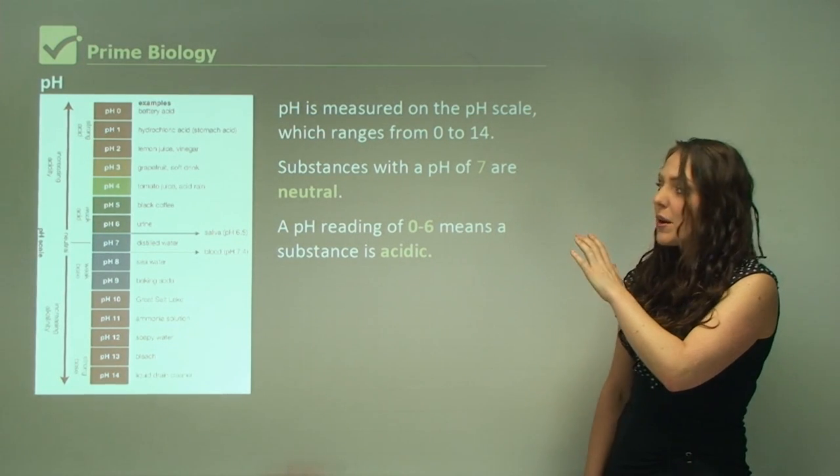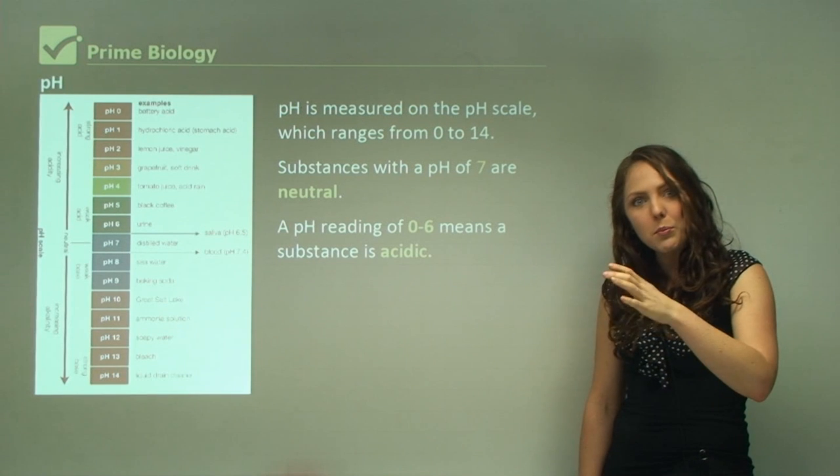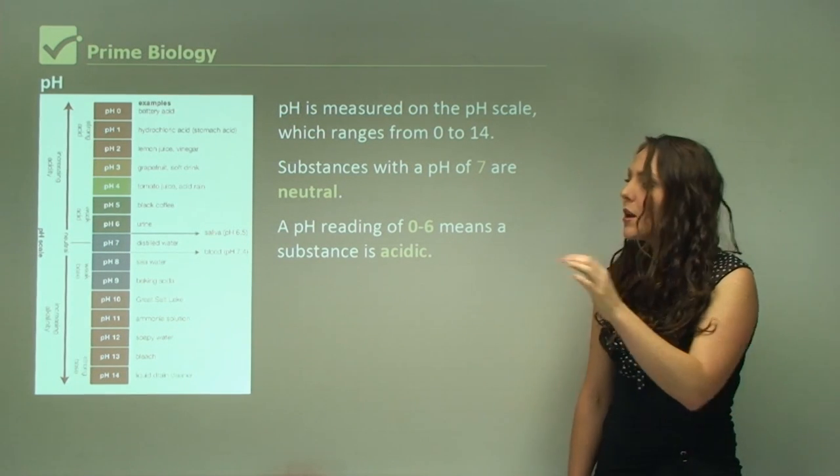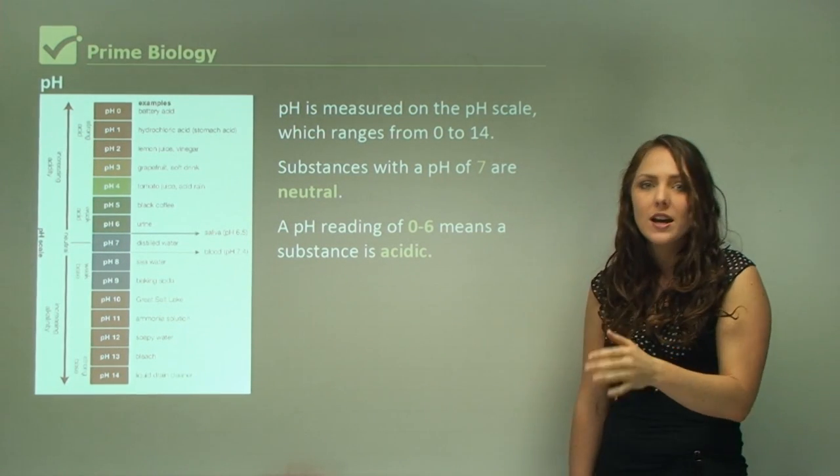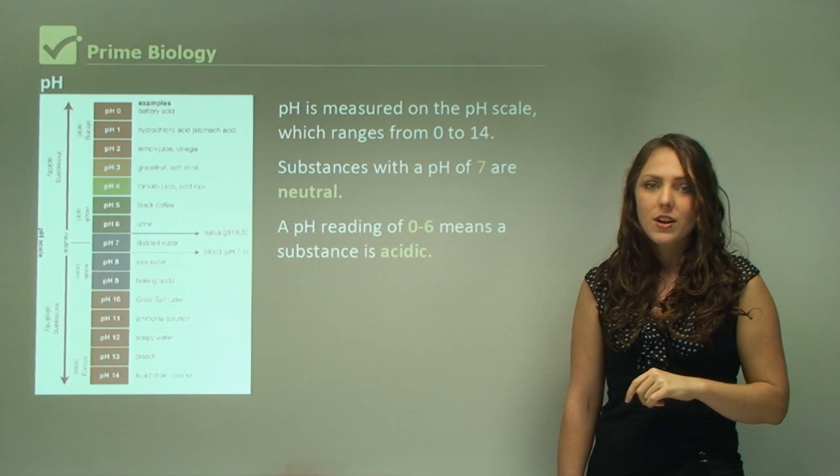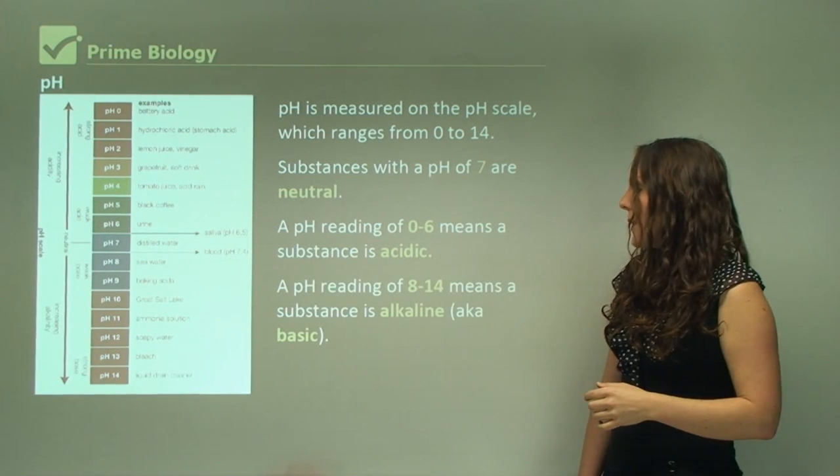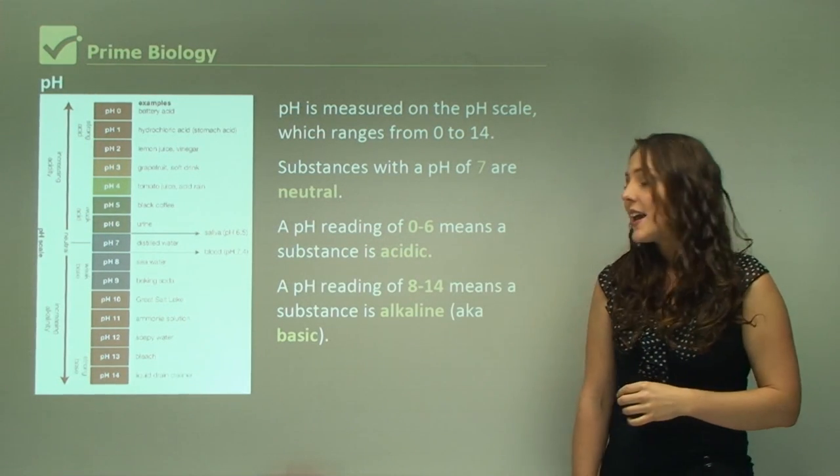If you go more towards 0 it's very acidic. Around pH 3 is a medium acidic, but if you go to pH 6 it's only slightly acidic, not very strong acid at all.